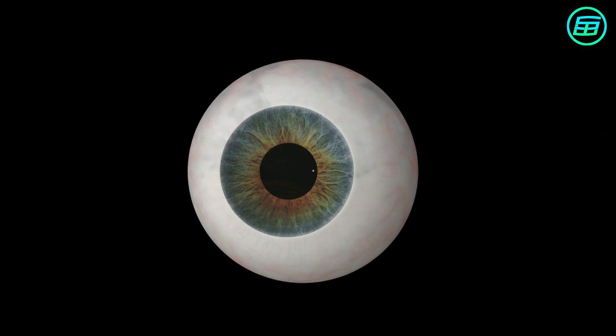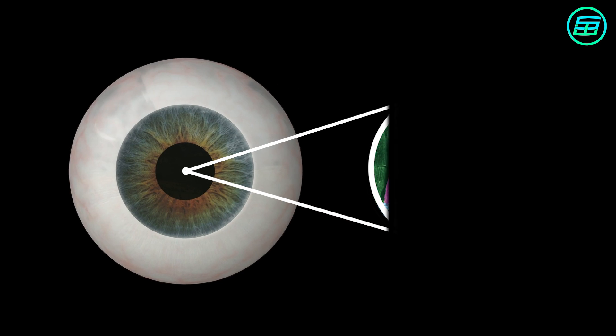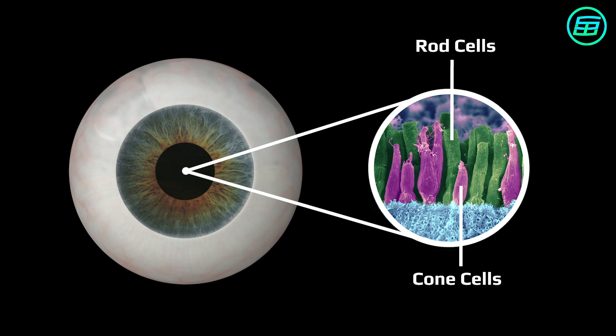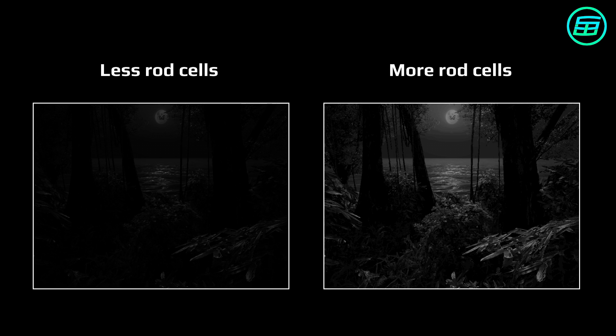In addition to the cone cells in our eyes, there are also rod cells. Rod cells enable us to see even when there's not enough light to produce color vision. The eyes of animals that can see well at night have a greater concentration of rod cells.